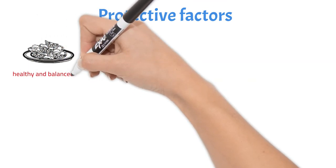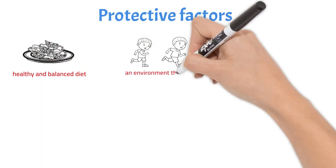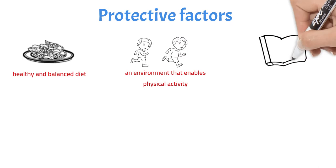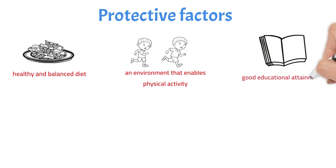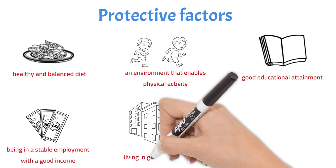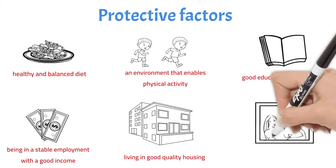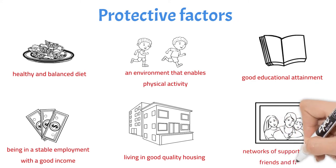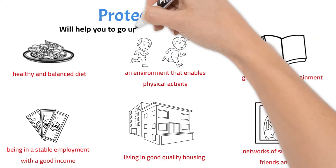Protective factors include having a healthy and balanced diet, an environment that enables physical activity, good educational attainment, being in stable employment with a good income, living in good quality housing, and having networks of support including family and friends. These factors will help you to go upwards along the trajectory of health.